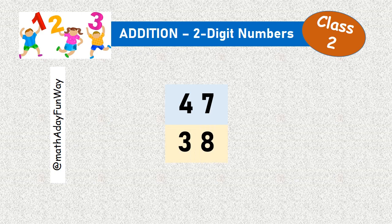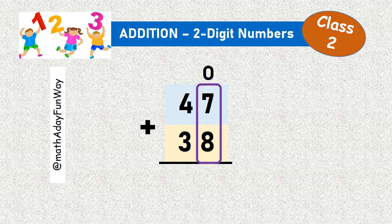First of all, we arrange the numbers in a column, writing one number below the other. The 1's place is on the right and the 10's place is on the left.